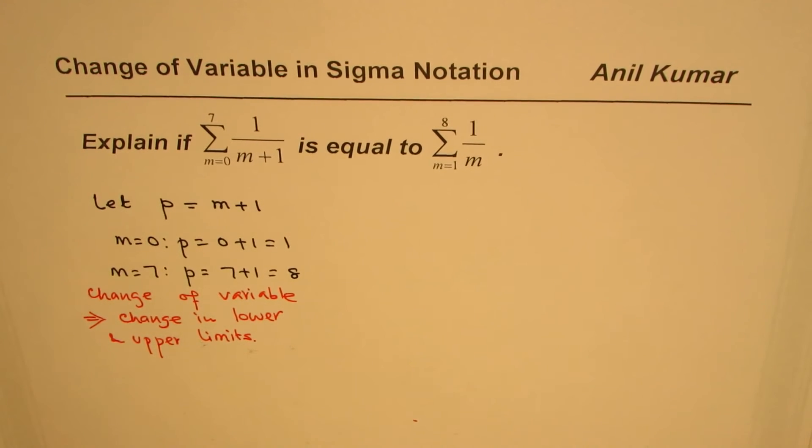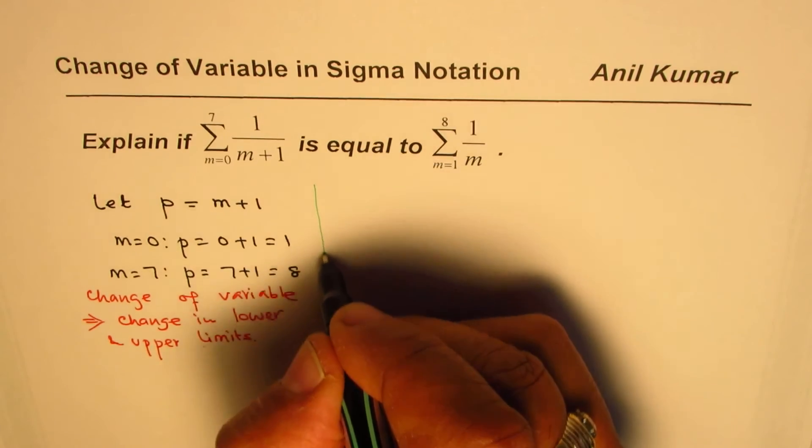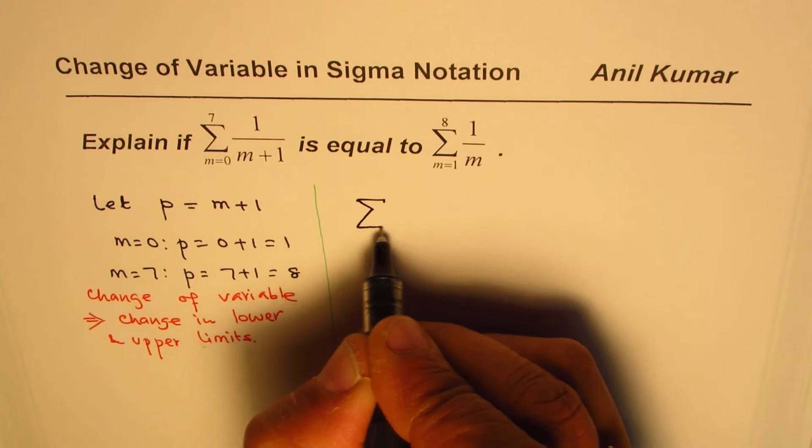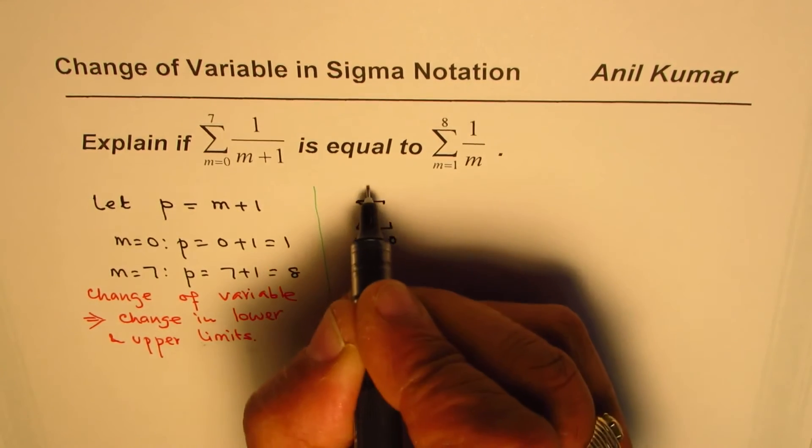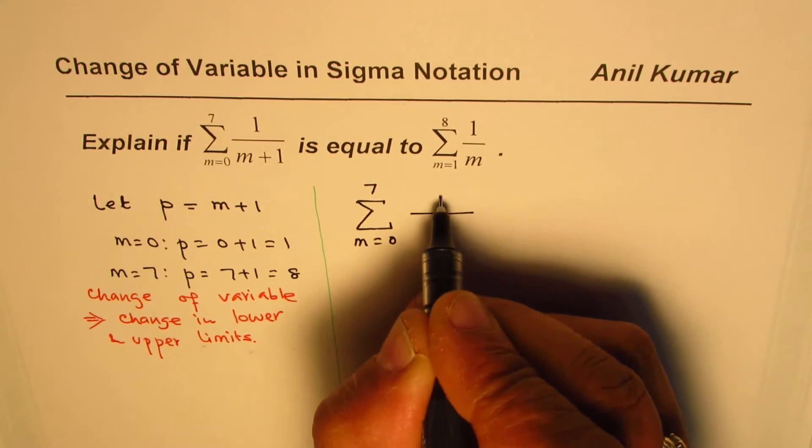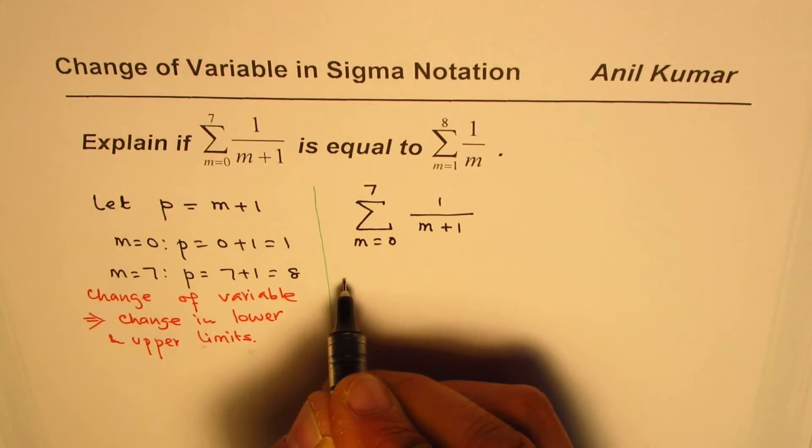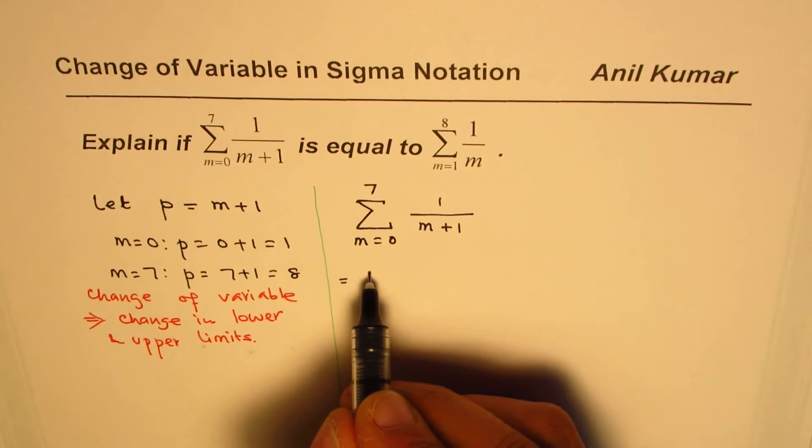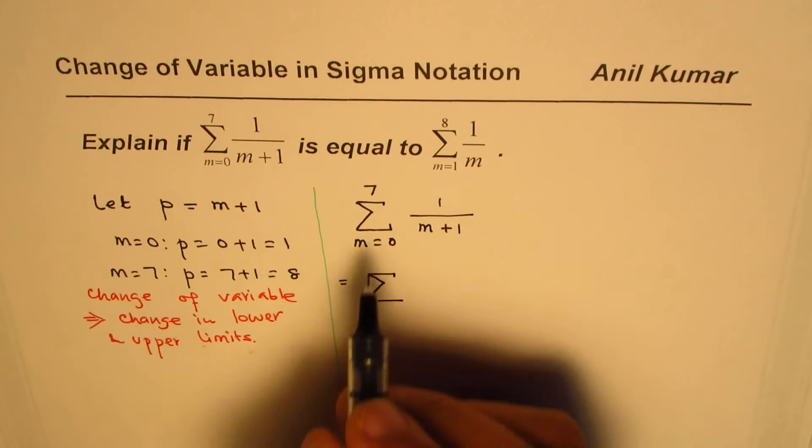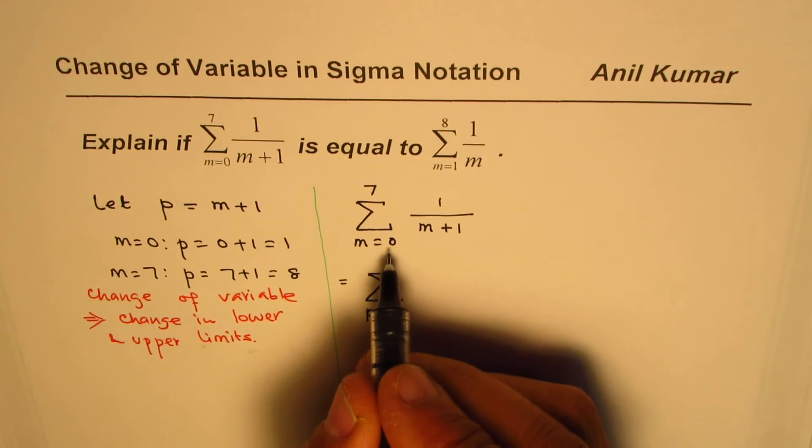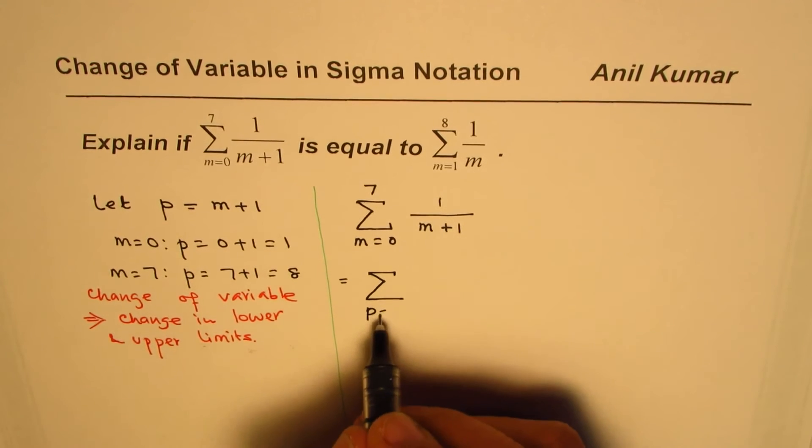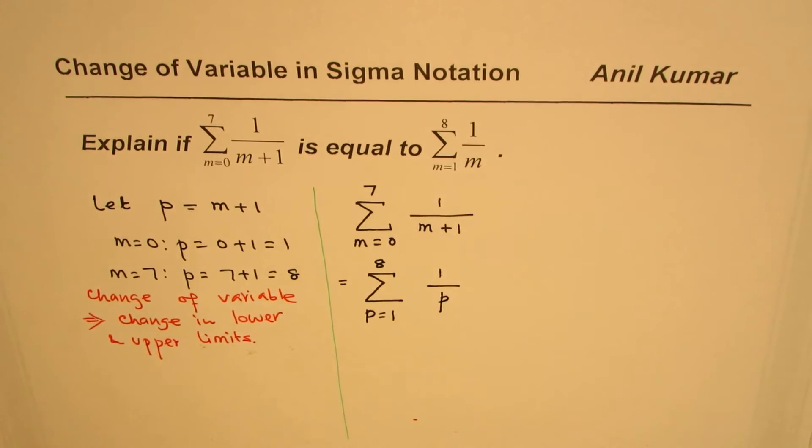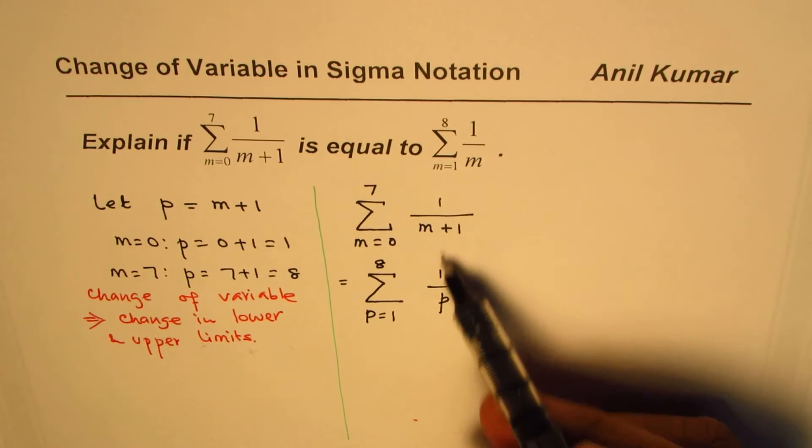Let us apply this change and rewrite the expression. If I write this summation, which is given to us as m equals 0 to 7 for 1 over m plus 1, and I'm changing m plus 1 to p, then the limits of lower and upper bound change. M becomes p, instead of from 0 it becomes from 1 to 8, and I can write this as 1 over p. That is how I can change the variable.